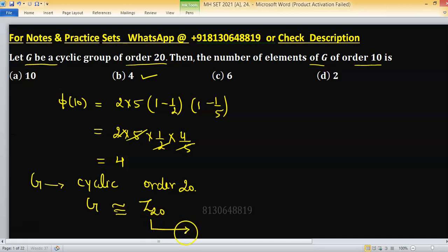The number of elements in Z20 having order 10 equals the number of elements of order 10 in G. So in Z20, how do we compute elements of a specific order?